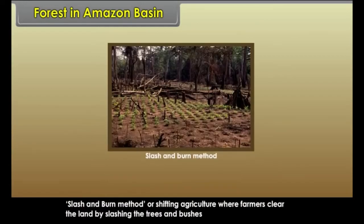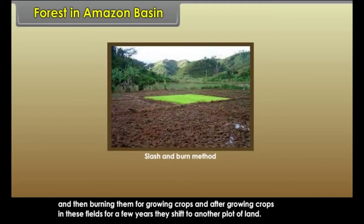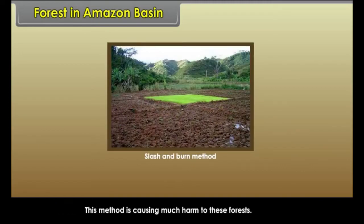Slash and burn method, or shifting agriculture, is where farmers clear the land by slashing the trees and bushes and then burning them for growing crops. After growing crops in these fields for a few years, they shift to another plot of land. This method is causing much harm to these forests.